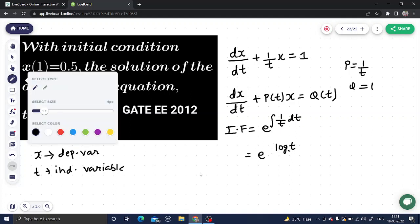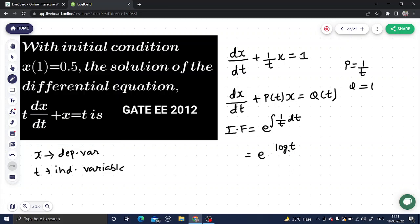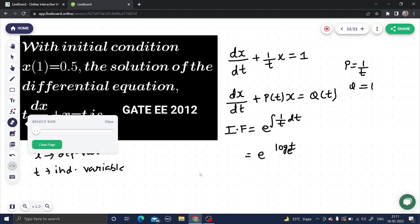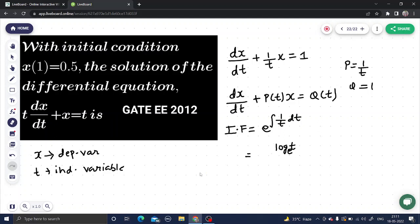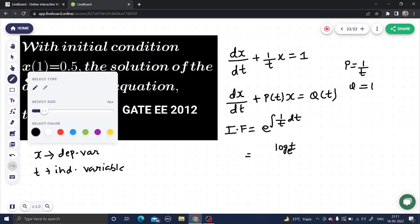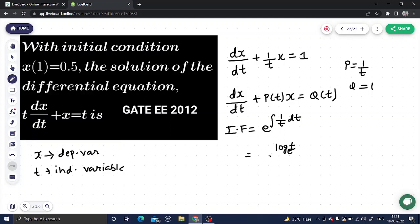So e to the power log t. If we suppose that here also we have base e, let me write it a better way. This is e to the power log t base e. We know a to the power log